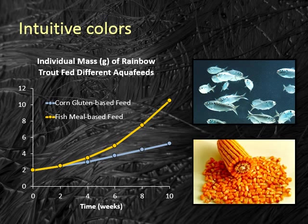In addition to the abstract feelings we associate with colors, you should consider whether elements in your presentation might be intuitively associated with certain colors. For example, this figure illustrates the hypothetical growth of fish fed diets containing fish meal or corn gluten meal as protein sources. At first glance, which treatment did you assume was corn? Probably not the blue line, since corn is yellow. Your audience would spend a lot less time interpreting the figure legend if the colors of these two lines were switched to match intuition.